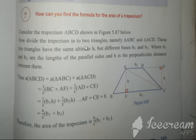Now divide the trapezium into two triangles. Trapezium ABCD. The trapezium is divided into triangles. These triangles have the same altitudes, but different bases.